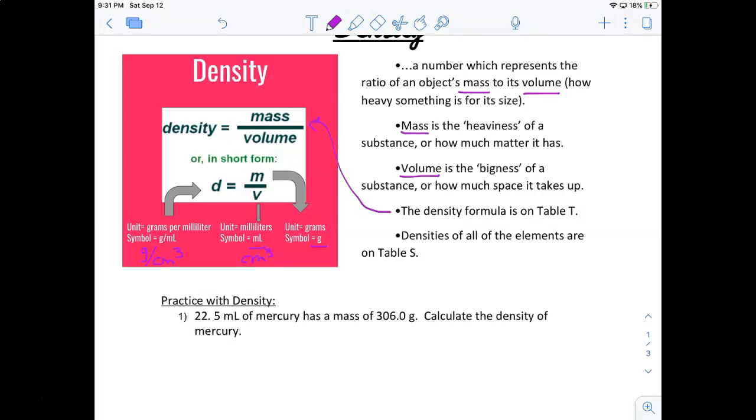Chemistry reference tables have a lot of important and useful things for us. If you look on table T, which is the last table in the chemistry reference tables, the density formula is the first formula there. So this is not something you have to memorize. Something that's also really cool in your reference tables, all of the elements that exist in the world, they have a very specific density of their own. And all of those densities are listed on table S of the reference tables. So those are two points on the reference tables you can go if the question is about density.